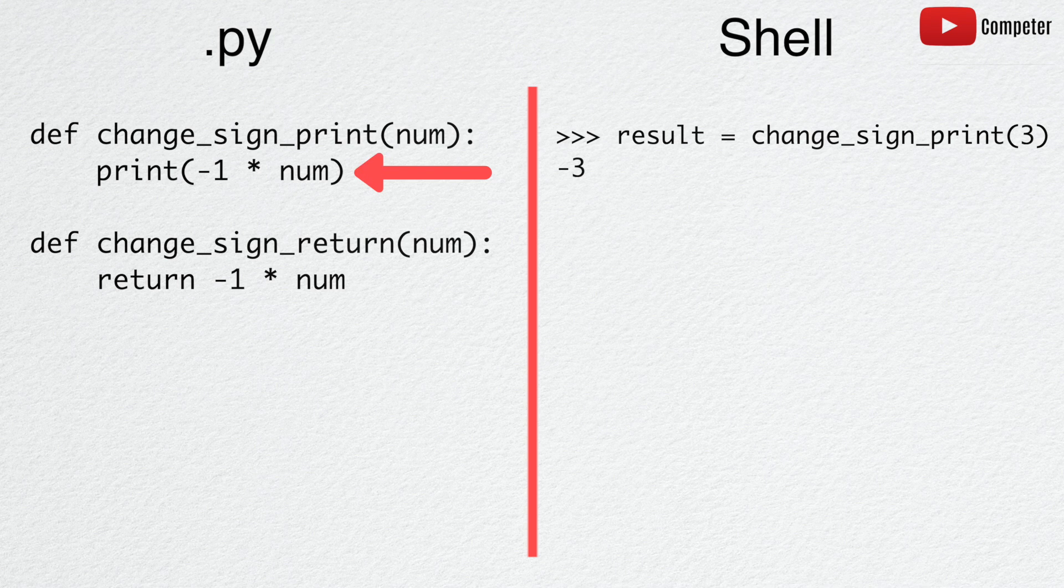Now, when we print result, it contains none, which is Python's way of saying that nothing is stored in the variable. This is because the function never returned a value.